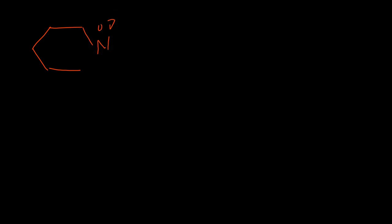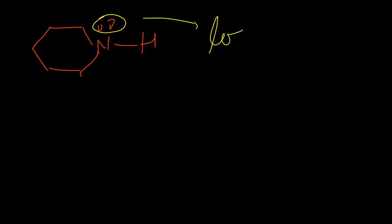The very first structure we have is piperidine. Now students, if you talk about the electrons of this structure, this lone pair electron on nitrogen is localized.